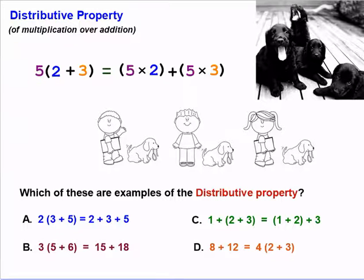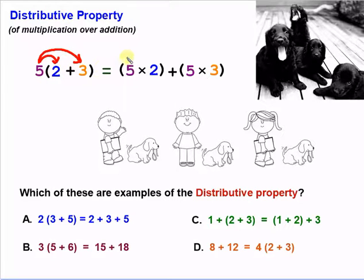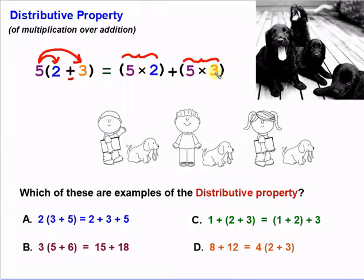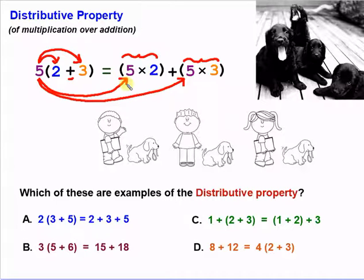The distributive property says we can write this in a different way. If we're saying five times two plus three in parentheses, we can also write that by distributing the five to each one of these numbers. So we distribute the five — five times two — and then bring our addition down, and then five times three. Five times two plus five times three. We distributed our five to each one of those numbers, just like we passed a puppy to each of these two numbers.